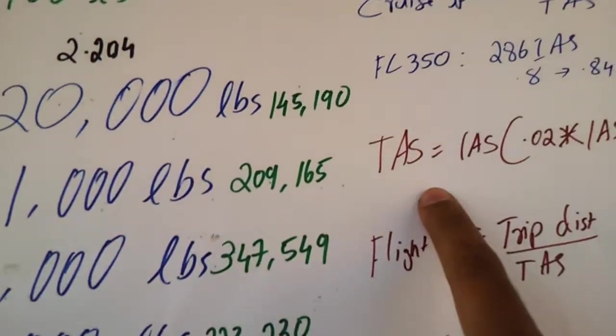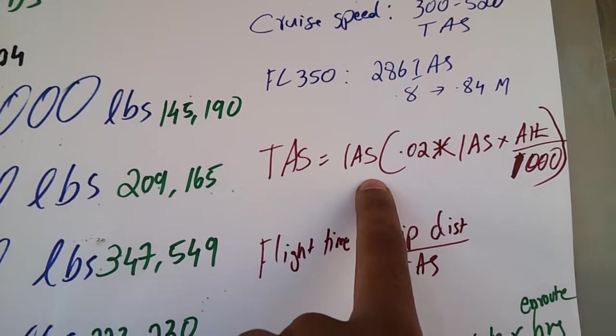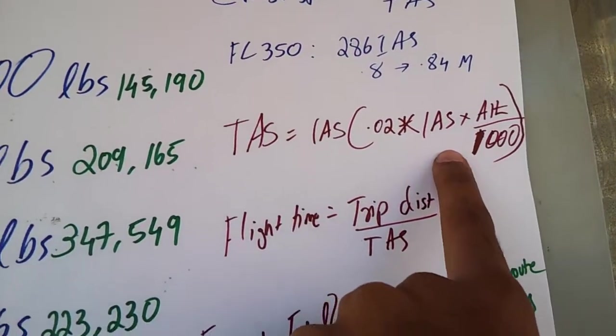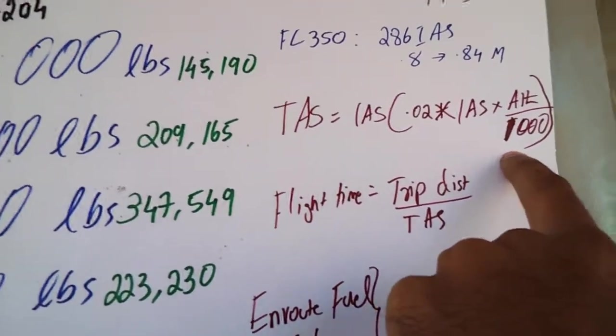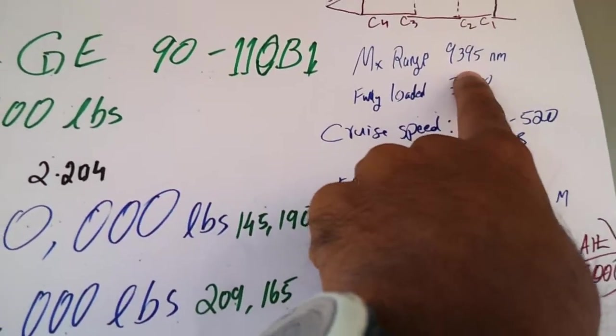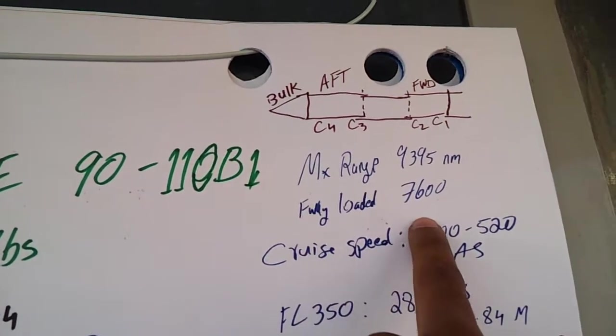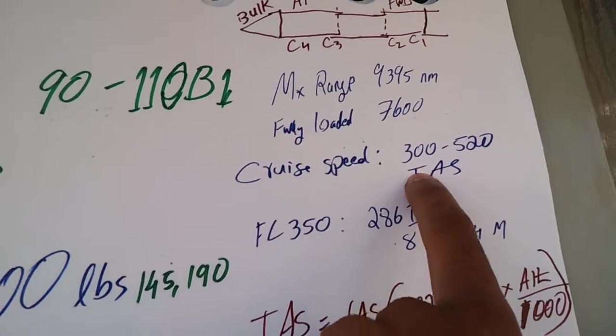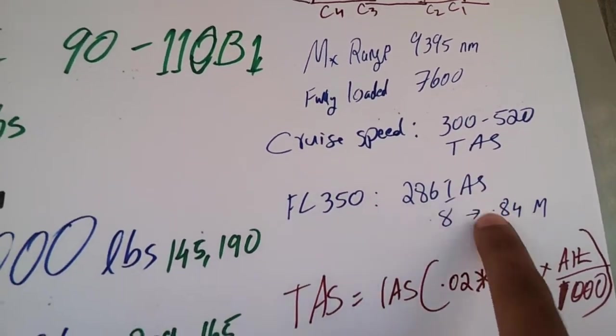So here is our formula. True airspeed equals IAS in the brackets: 0.2 times the indicated airspeed times the altitude divided by 1,000. That's when you get that. The maximum range of 777 is 9,395 nautical miles, fully loaded is 7,600, and the speed is around between 300 and 520 true airspeed.